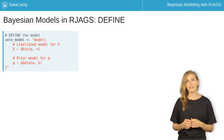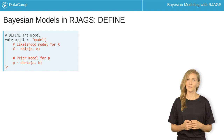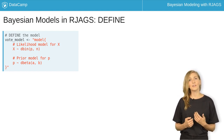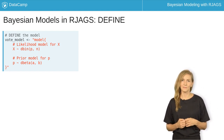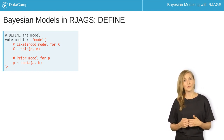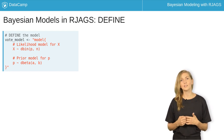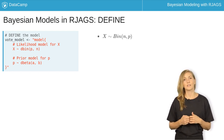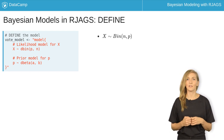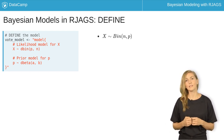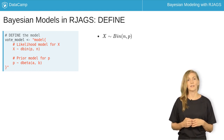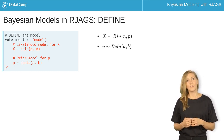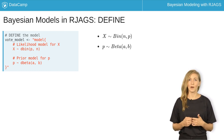There are three essential steps to all RJAGS analyses: Define, Compile, and Simulate. To begin, we define the Bayesian model by a model string and store this as vote_model. The two lines of code within the curly brackets define the two important pieces of your model. The dbin function specifies that the likelihood structure, or the dependence of X on P, is modeled by the binomial(N,P) distribution. Similarly, the dbeta function specifies a Beta(A,B) prior model for P.